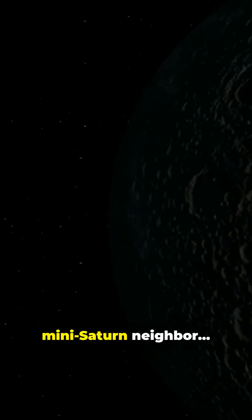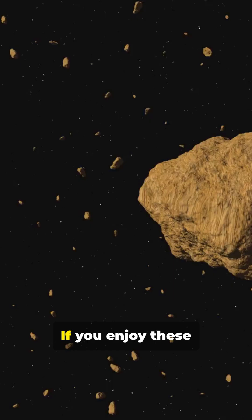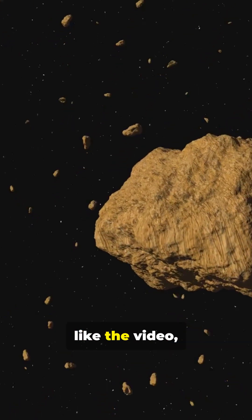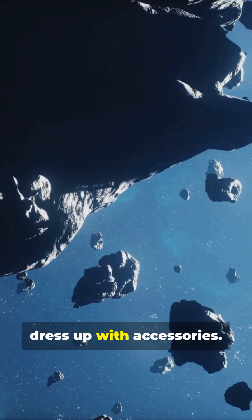So yes, Earth has a mini-Saturn neighbor hiding in the outer solar system. If you enjoy these strange cosmic discoveries, like the video, subscribe. Even asteroids sometimes like to dress up with accessories.